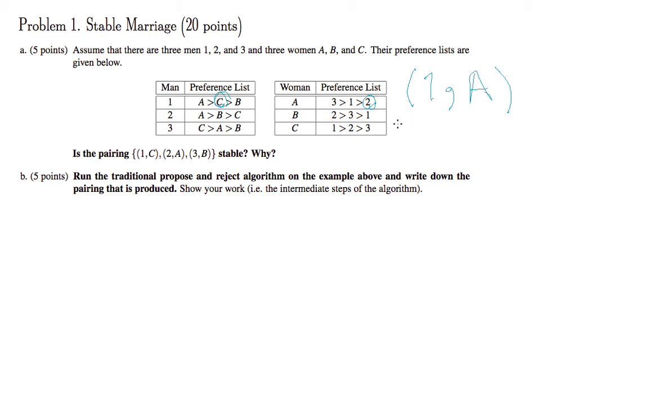Now, if you look a little bit more carefully, you would find out another rogue couple, too, which is the couple 3 and A. Okay, so let's see if this couple is rogue. Would 3 ditch his current partner in order to be with A?